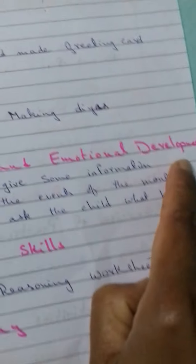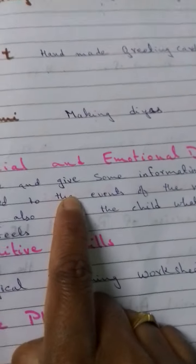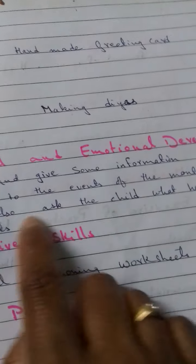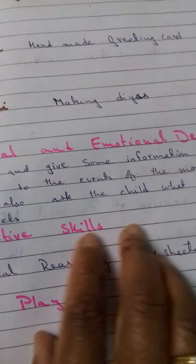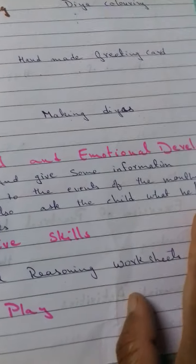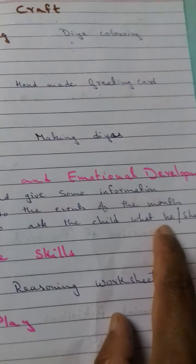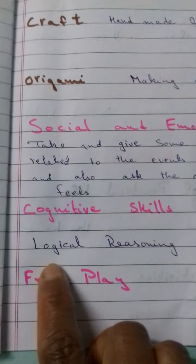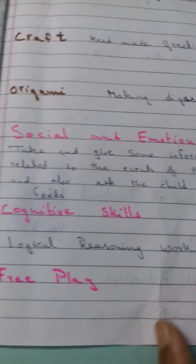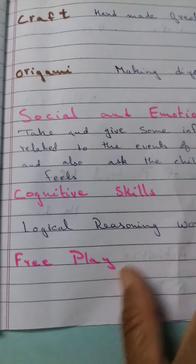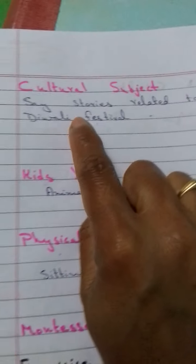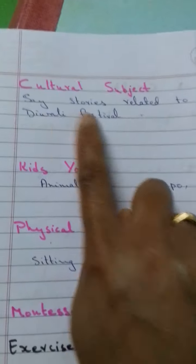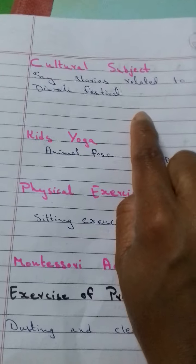Social and emotional development — talk and give some information related to the events of the month and also ask the child what he or she feels. Cognitive skills — it is logical reasoning worksheets and free play based on the child's interest. In cultural subjects, say stories related to Diwali festival.